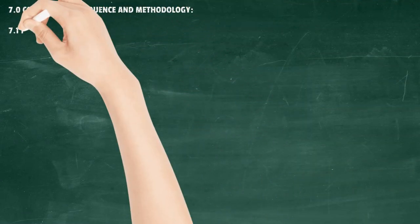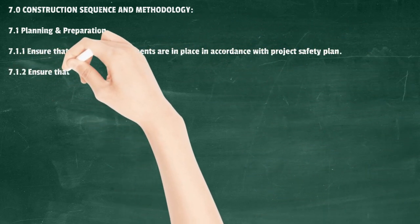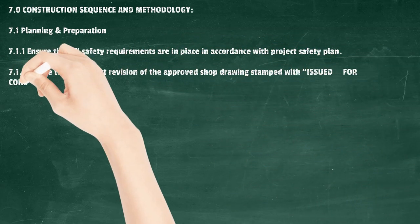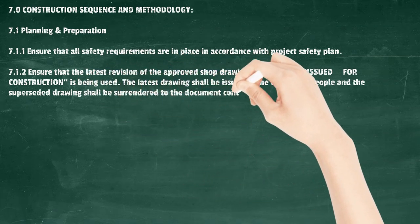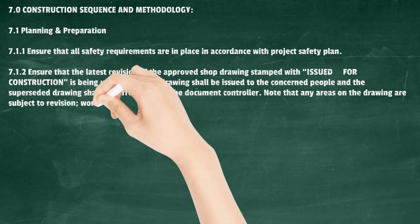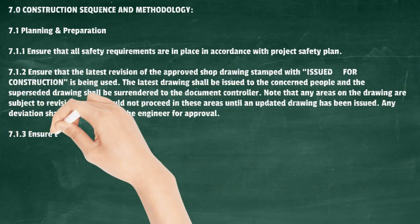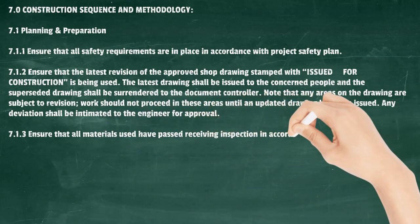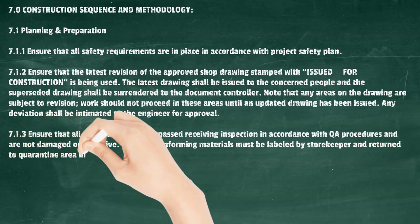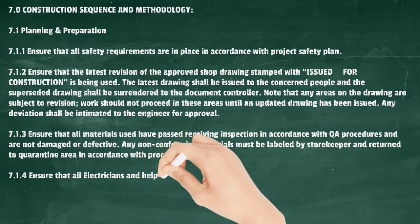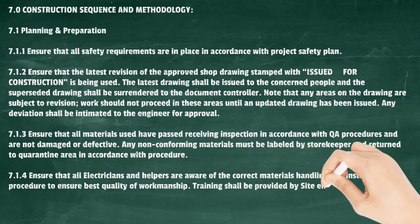Construction Sequence and Methodology - Planning and Preparation: Ensure all safety requirements are in place per the project safety plan. Ensure the latest revision of the approved shop drawing stamped 'Issued for Construction' is being used; superseded drawings shall be surrendered to the document controller. Any areas subject to revision shall not proceed until updated drawings are issued, and any deviation shall be intimated to the engineer for approval. Ensure all materials have passed receiving inspection and are not damaged or defective. Non-conforming materials must be labeled and returned to quarantine. Ensure all electricians and helpers are aware of correct handling and installation procedures. Training shall be provided by site engineers as required.